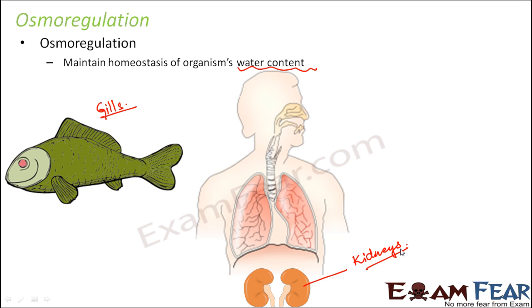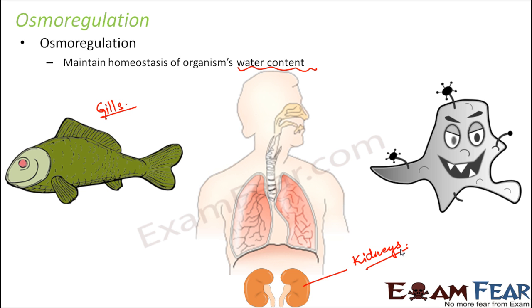Not only advanced animals, but even lower animals — for example, amoeba — also perform osmoregulation. Amoeba has contractile vacuoles, and these contractile vacuoles help to maintain the right amount of water content inside the body of amoeba. Amoeba is made up of just one single cell, yet even inside that single cell, we have contractile vacuoles specially for the purpose of osmoregulation.